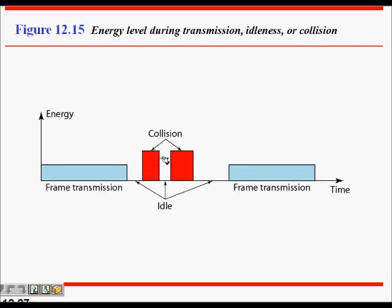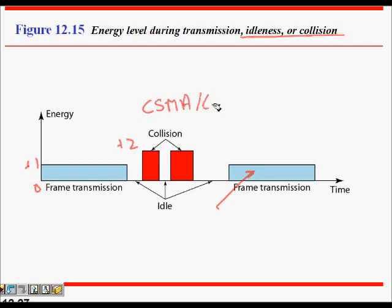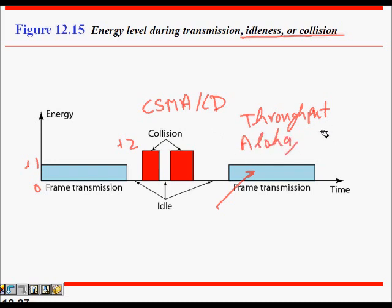To physically detect collision, we check the energy level on the channel. When idle, energy is near zero. During normal frame transmission, energy is at a mid level (e.g., +1). When a collision occurs, energy is at the highest level (e.g., +2). CSMA/CD achieves much better throughput compared to ALOHA or basic CSMA — often 50% to 90% throughput.